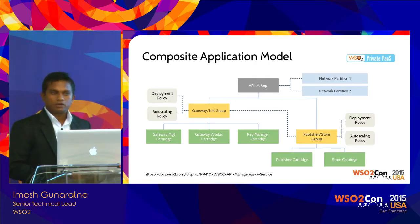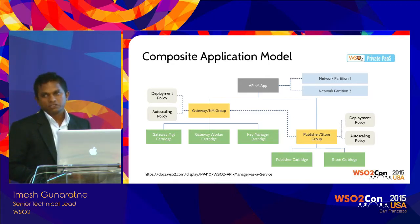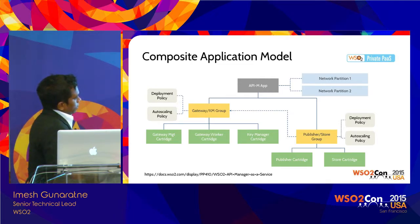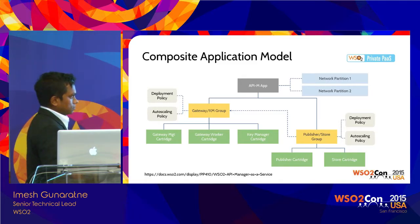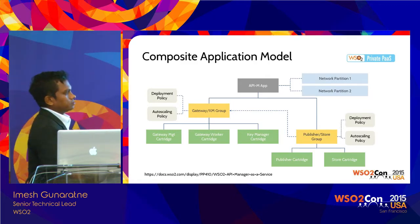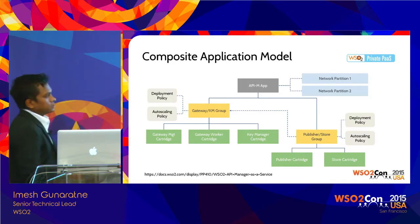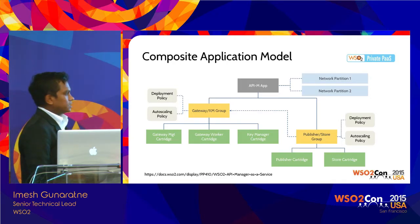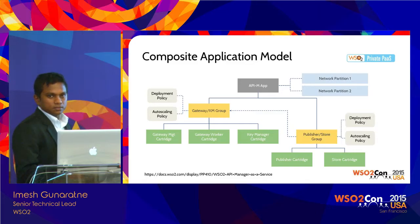You can model dependencies — for instance, the gateway group should start first, then the store and publisher. Until those clusters are activated, the dependent part will not be created. Once created, the whole application gets activated. For scaling dependencies, you can say: if there is one instance of this group, I need two instances of that group — that scaling dependency is managed by the autoscaler to maintain the ratio between the two groups or clusters.